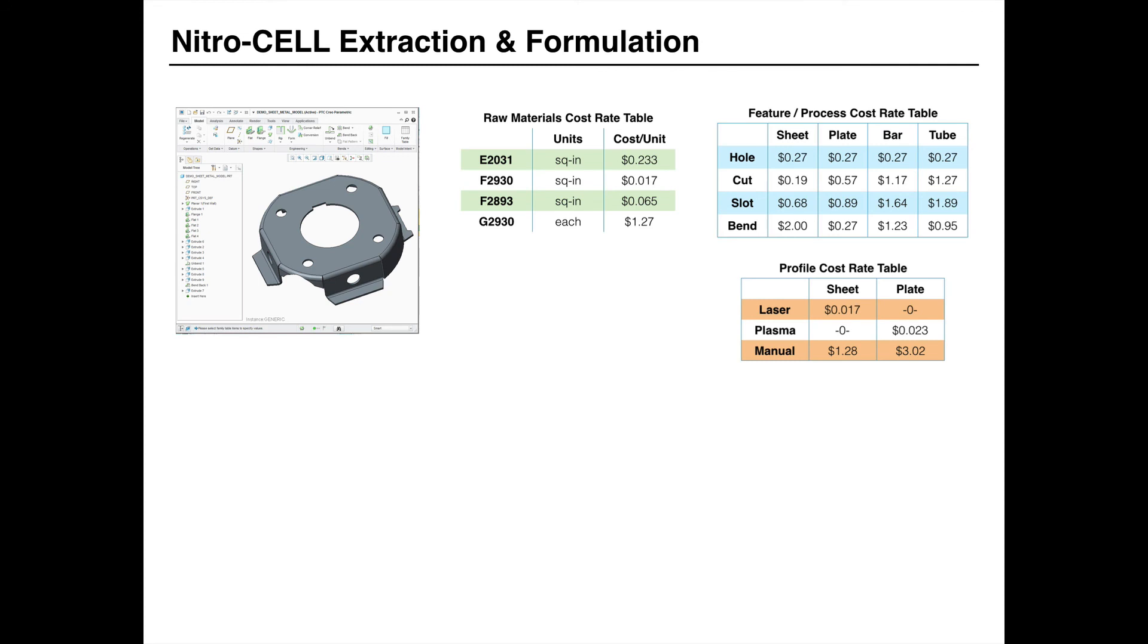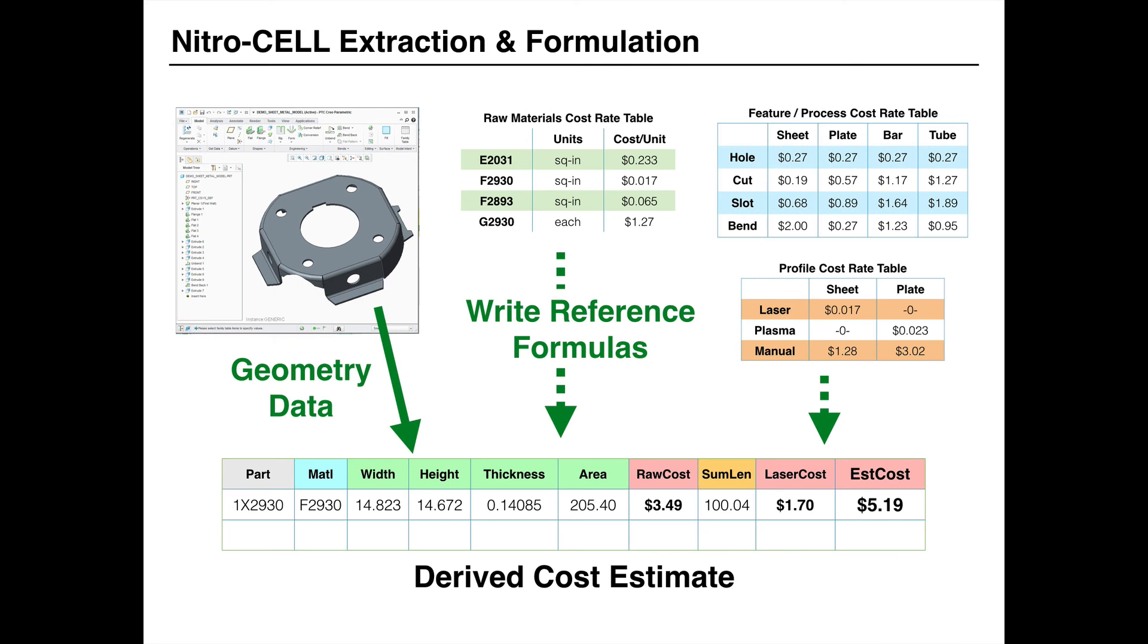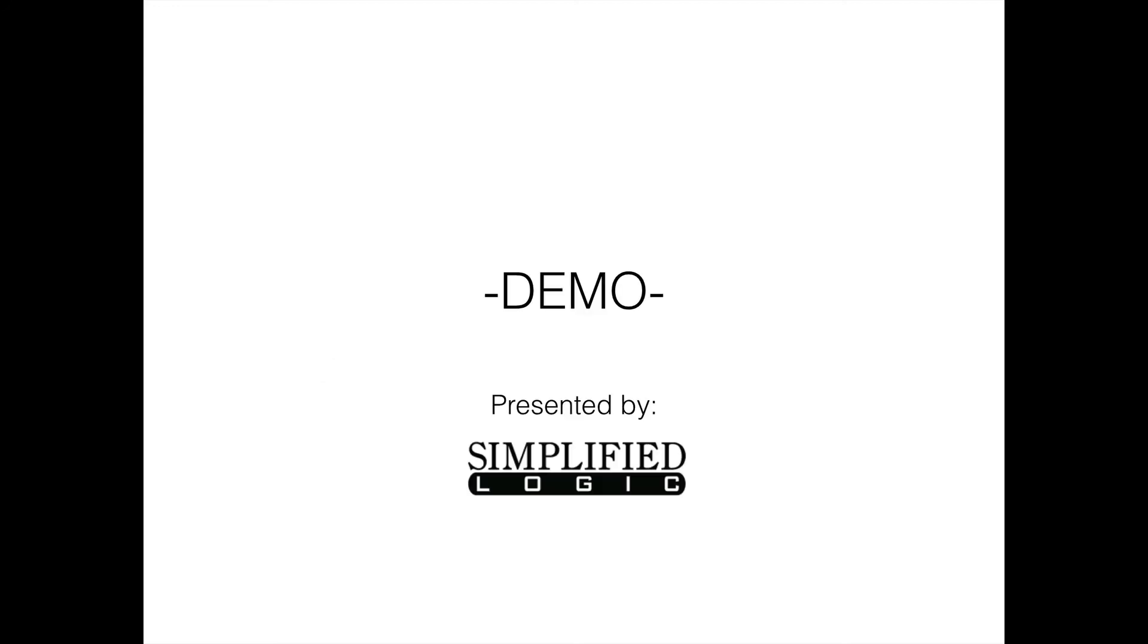So what this would look like is we would take a CREO model like we have here, and then we would simply write out the geometry data, combine it with the formulas that relate the table data that's in Excel to come up with a derived cost estimate. So let's take a quick demo in the next video of how this works with NitroCell.